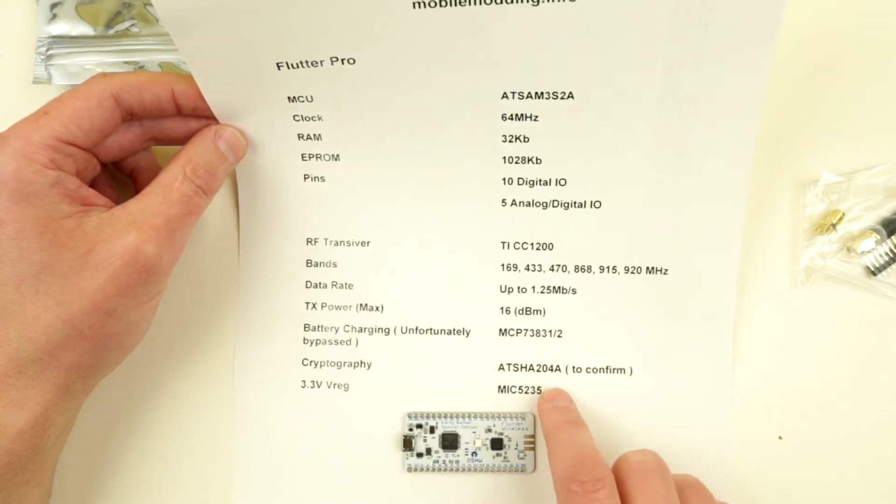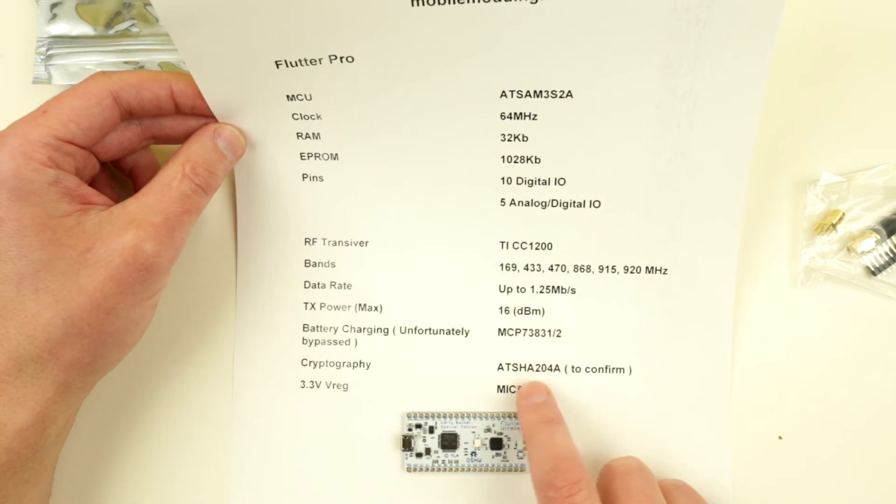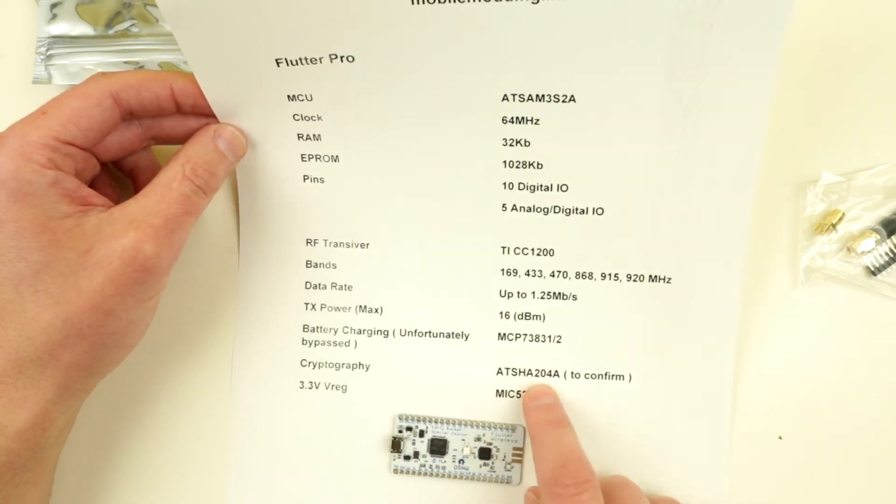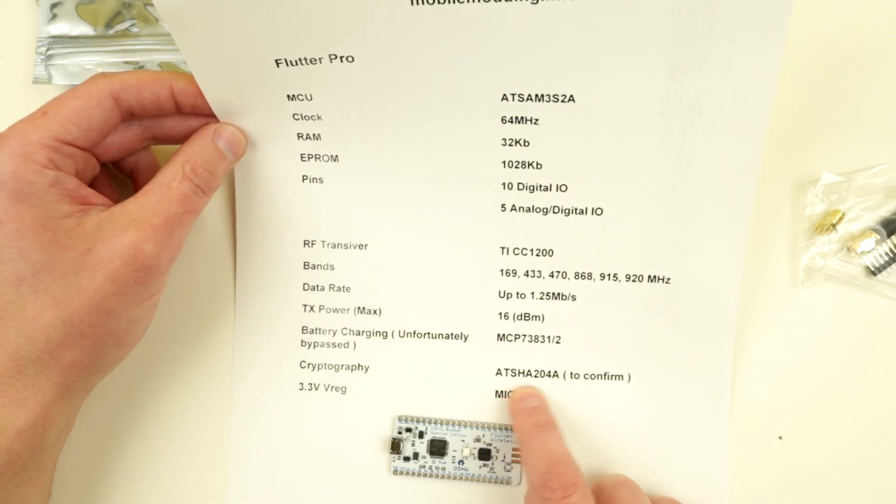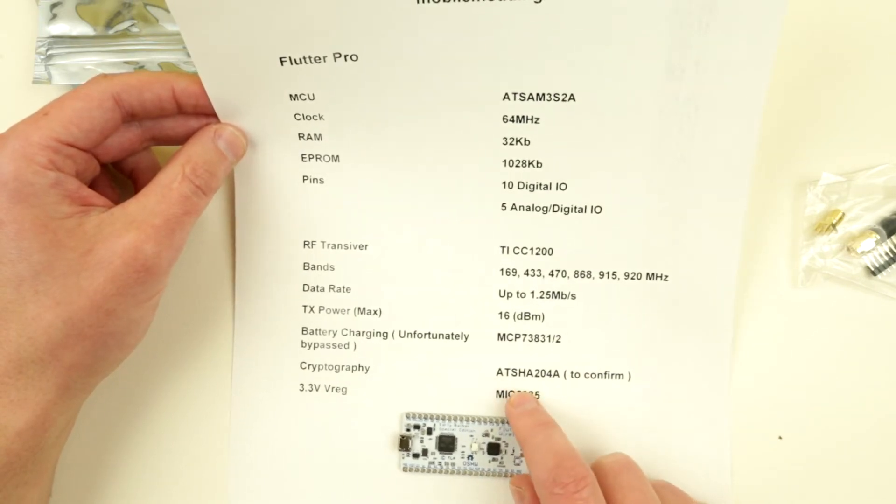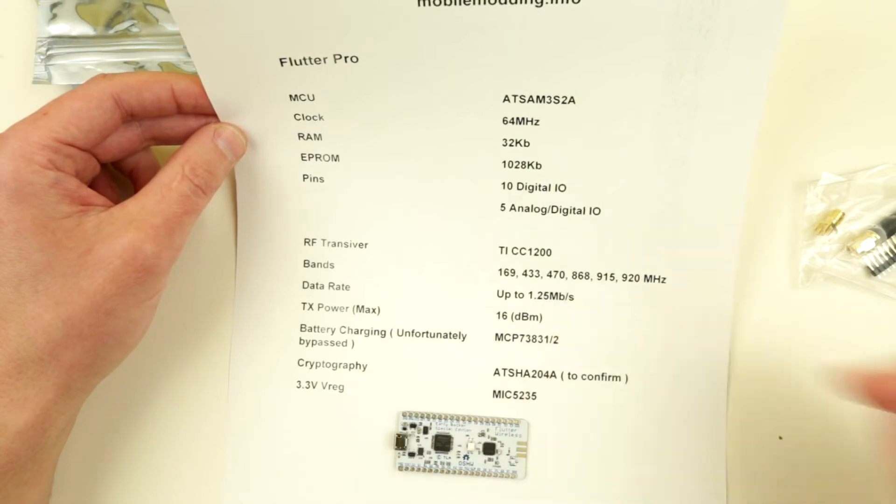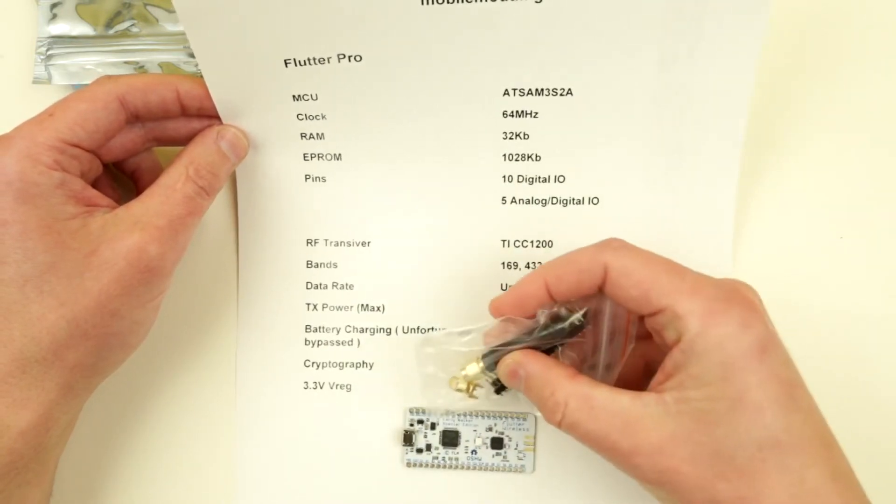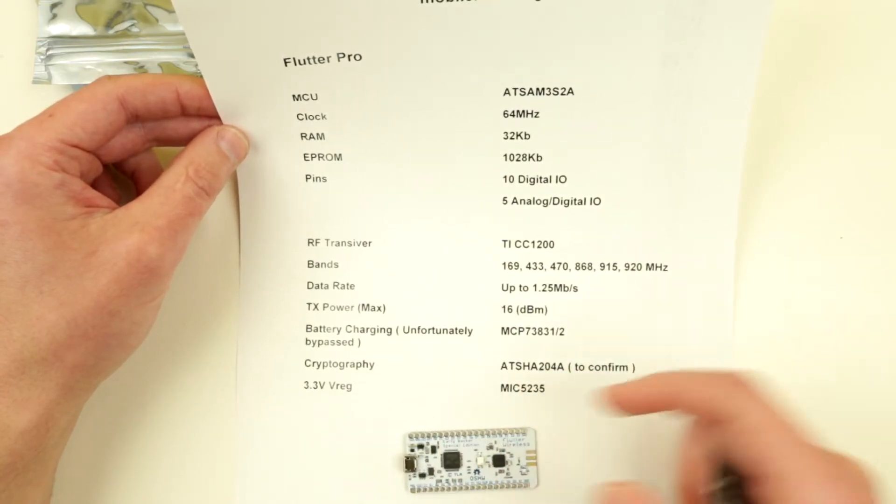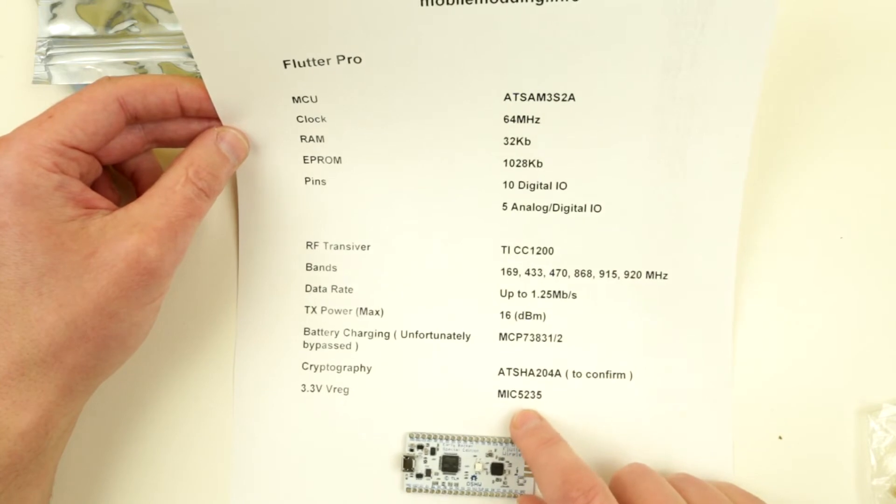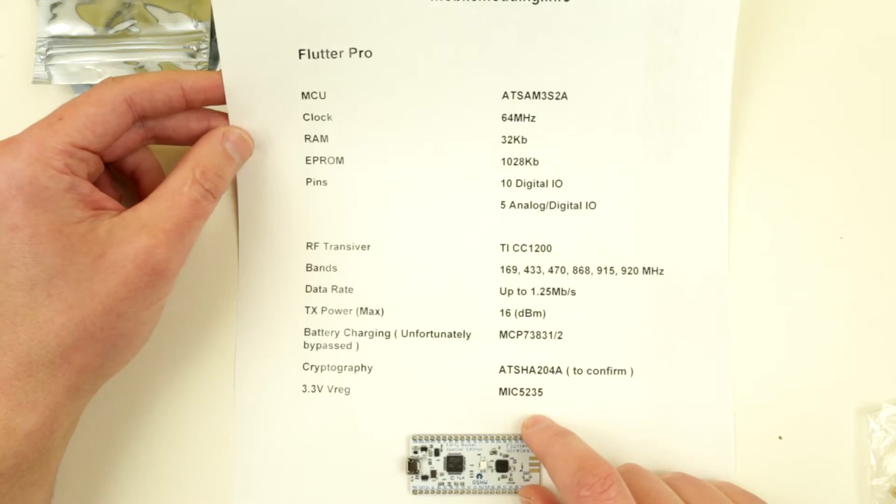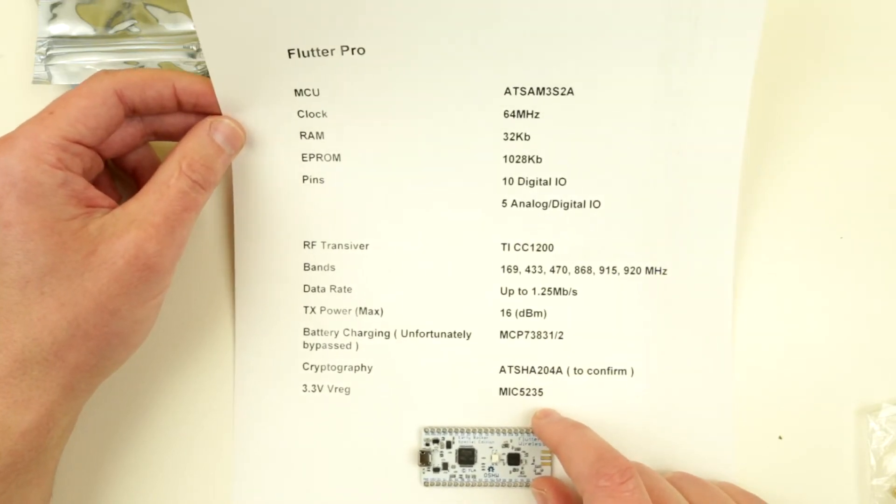It also has a cryptographic chip to store your keys. I'm not really into cryptography, so I need to learn more on that. This is an Atmel SHA204A, I need to confirm because that's what I kind of reverse engineered myself. I think that's the one over here. Then it uses 3.3 volt regulator, this one MIC-5235. This is what I derived from their schematics, BOM files, and bits and pieces available on the internet.